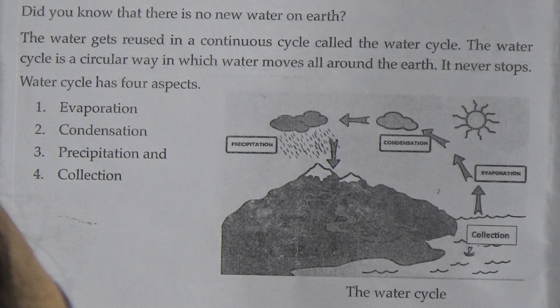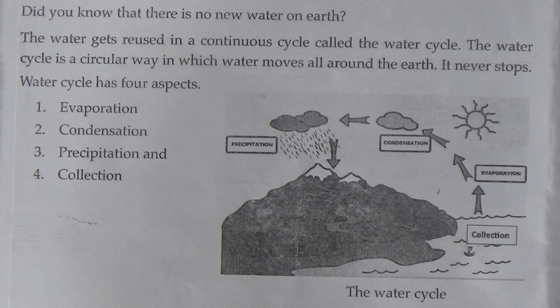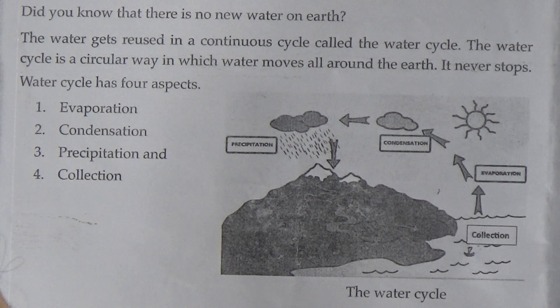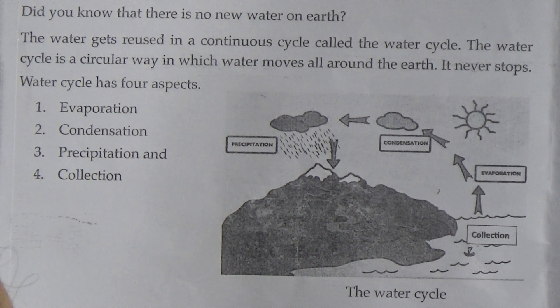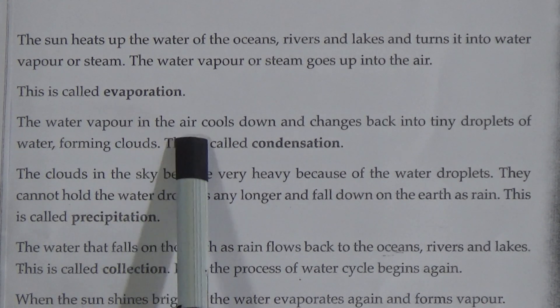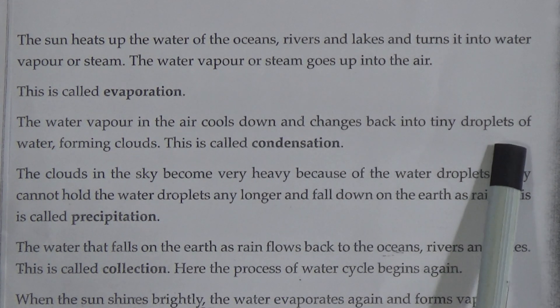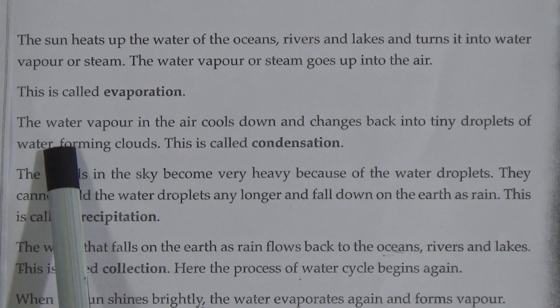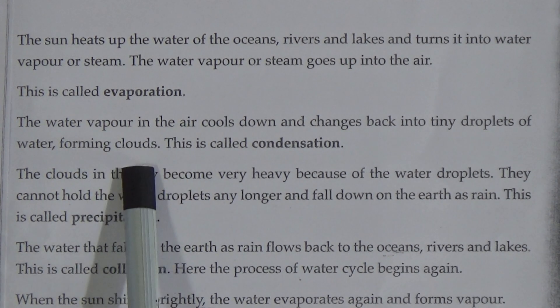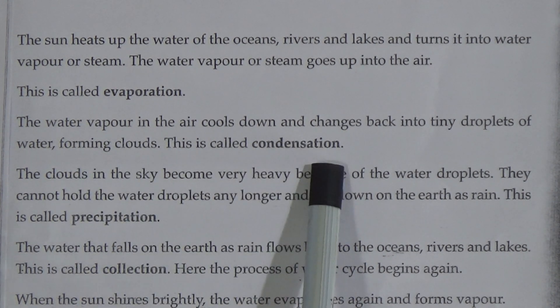The sun heats up the water of the oceans, rivers, and lakes and turns it into water vapor or steam. The water vapor or steam goes up into the air — this is called evaporation. The water vapor in the air cools down and changes back into tiny droplets of water, forming clouds. This is called condensation.